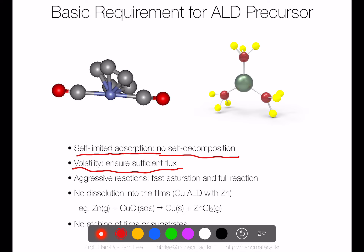The second requirement is volatility. Typically we put the precursor as a vapor-phase molecule from the canister to the chamber, so all precursors should vaporize very easily and transfer to the chamber through the manifold line. All precursors should be quite volatile for easy transport from canister to chamber.